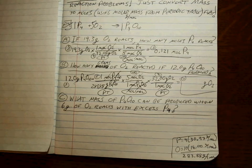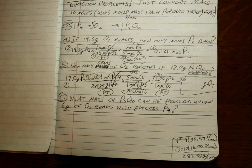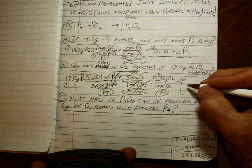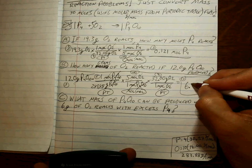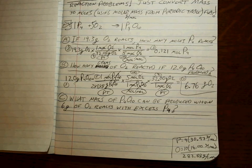So, let's check it out. Twelve divided by 283.88 times five times 32. Six point seven six grams. Good. Not too bad. Not too bad at all.